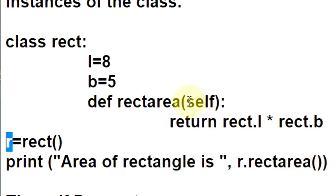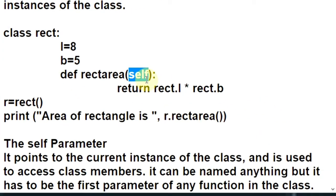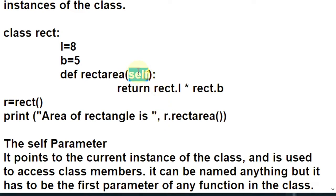Now what is this 'self'? When any object invokes any function, it sends itself as the first parameter to that function. So self refers to the object which called this function. R has invoked the RectArea function, so R is sending itself to the function — self is pointing to R. The function returns Rect.L multiplied by Rect.B, that is 8 into 5. Can I write self.L into self.B here? Obviously. Area returned is 40.